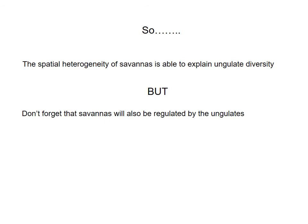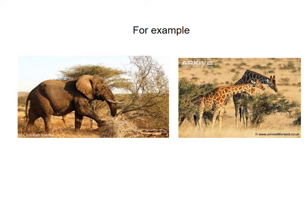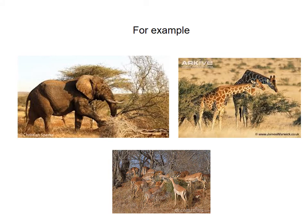So spatial patchiness or heterogeneity is able to explain the diversity in ungulates we see on the African savannah. But don't forget that savannahs are also controlled by the ungulates. It's not just that bottom-up processes control ungulate diversity — ungulates can also affect the savannahs, as we've heard in previous lectures. Elephants are known to push down trees and change the distribution of tree species. Giraffes are able to keep acacia trees within the fire-susceptible height class, so when fires come through those trees are burnt out. And impala, through their browsing, can maintain or decrease the recruitment of some important savannah trees.